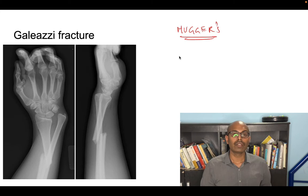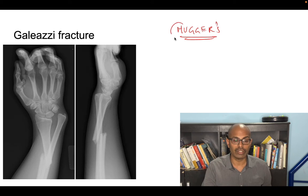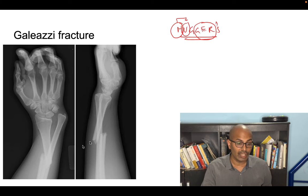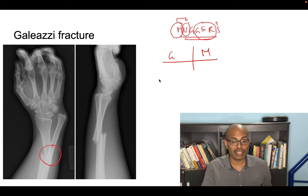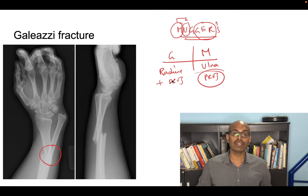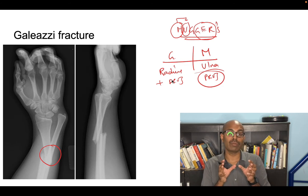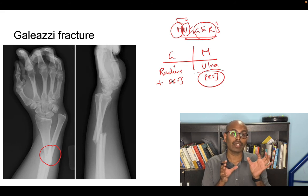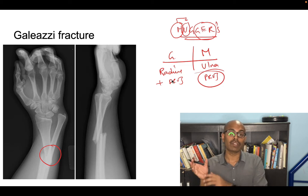For Galeazzi and Monteggia fractures, remember the mnemonic MUGGER: M for Monteggia, U for ulna — in Monteggia fracture the ulna is fractured. G for Galeazzi, R for radius — Galeazzi fracture is a radius fracture with DRUJ dislocation. Monteggia is an ulna fracture with proximal radial head dislocation. So: Monteggia = ulna fracture + radial head dislocation; Galeazzi = radius fracture + DRUJ dislocation.